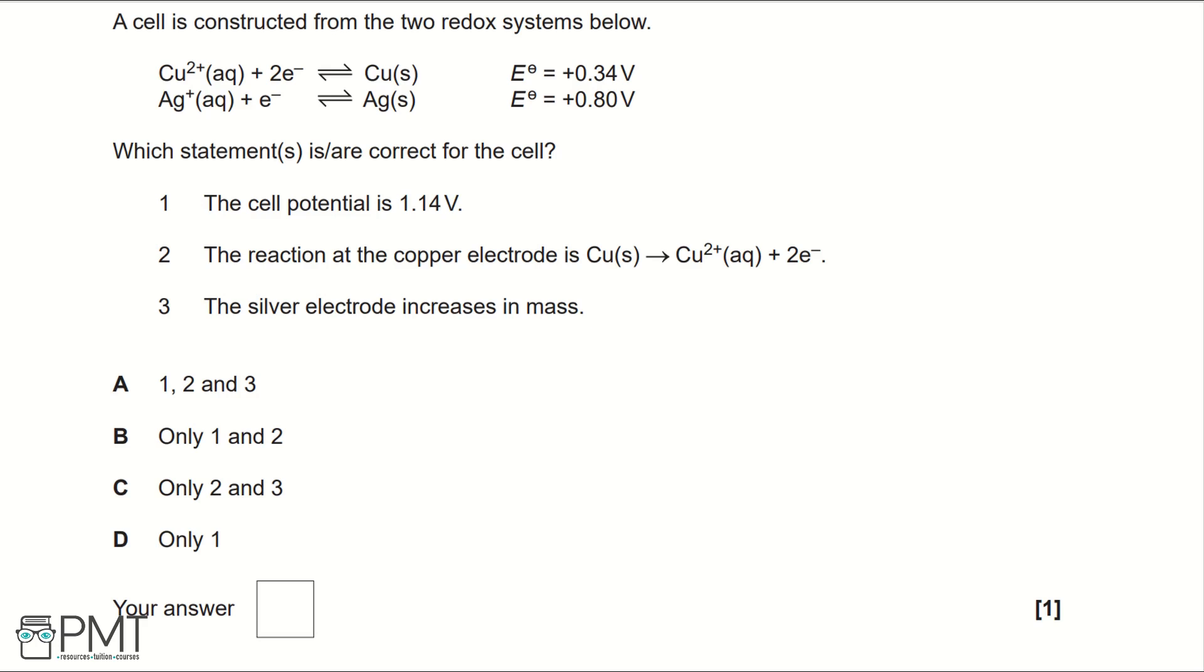If we look at the two redox systems and their electrode potentials, the more negative is at the copper electrode, that means equilibrium is going to go backwards, whereas at the silver it's going to go forwards.